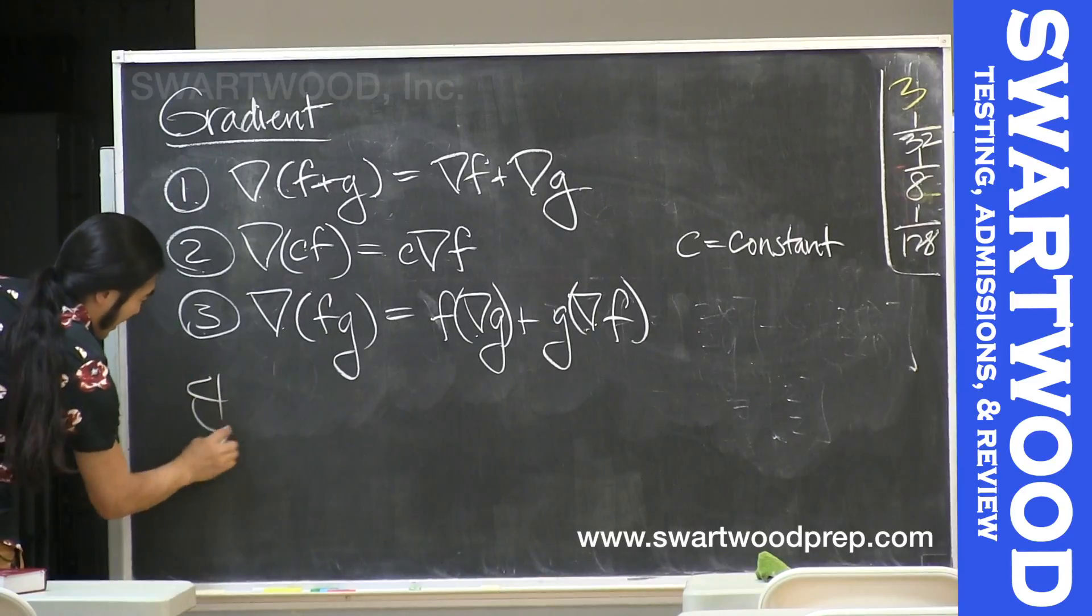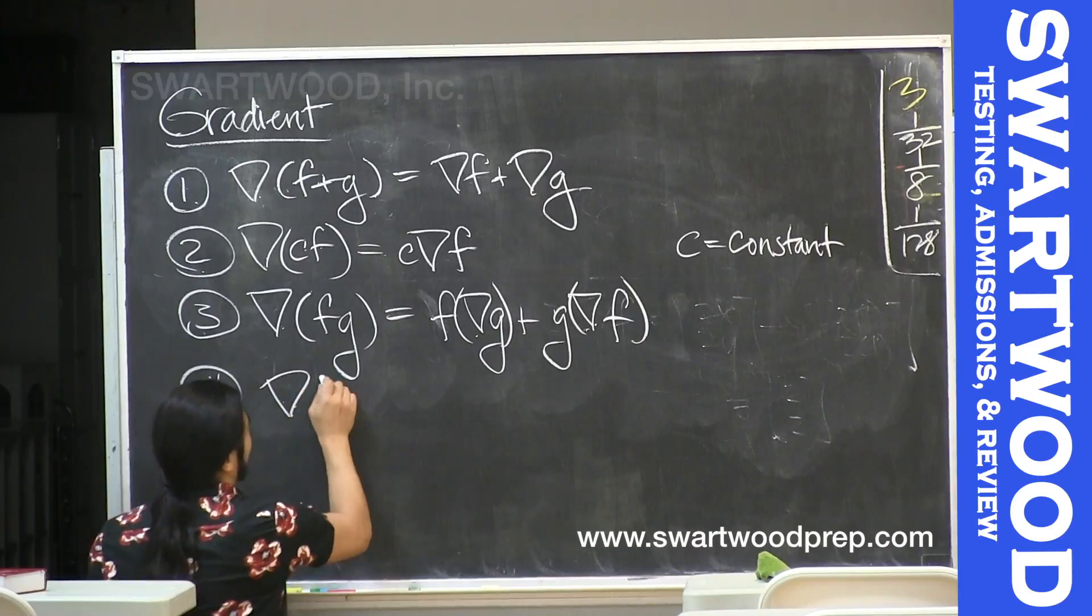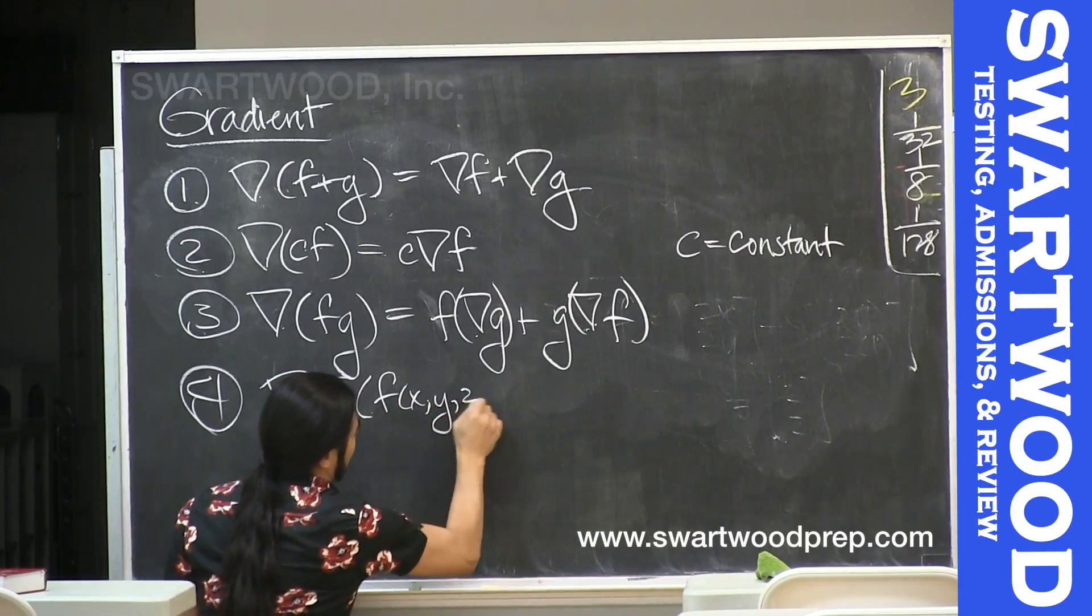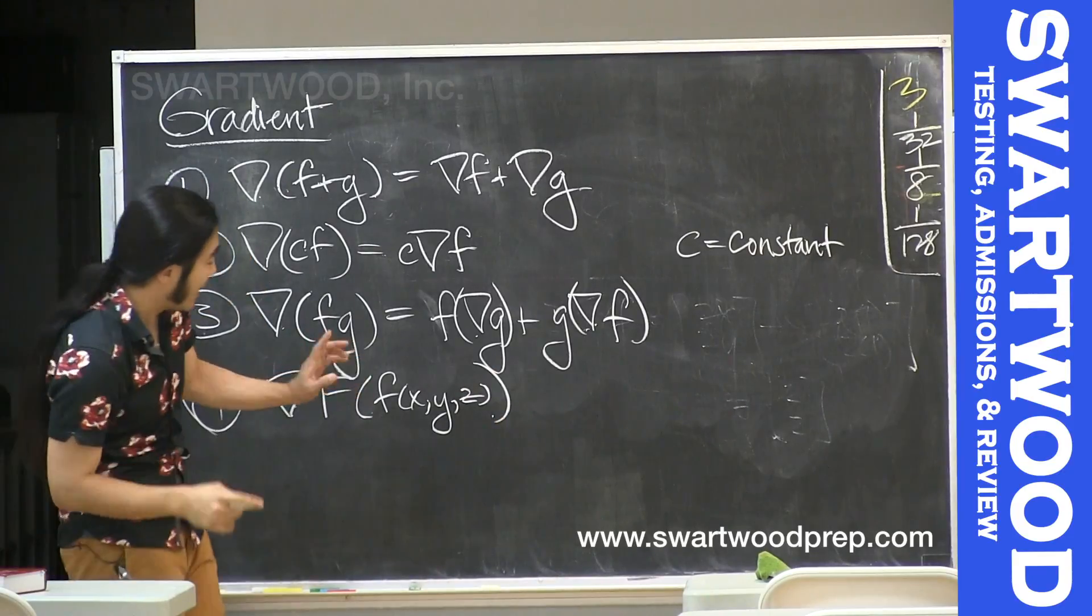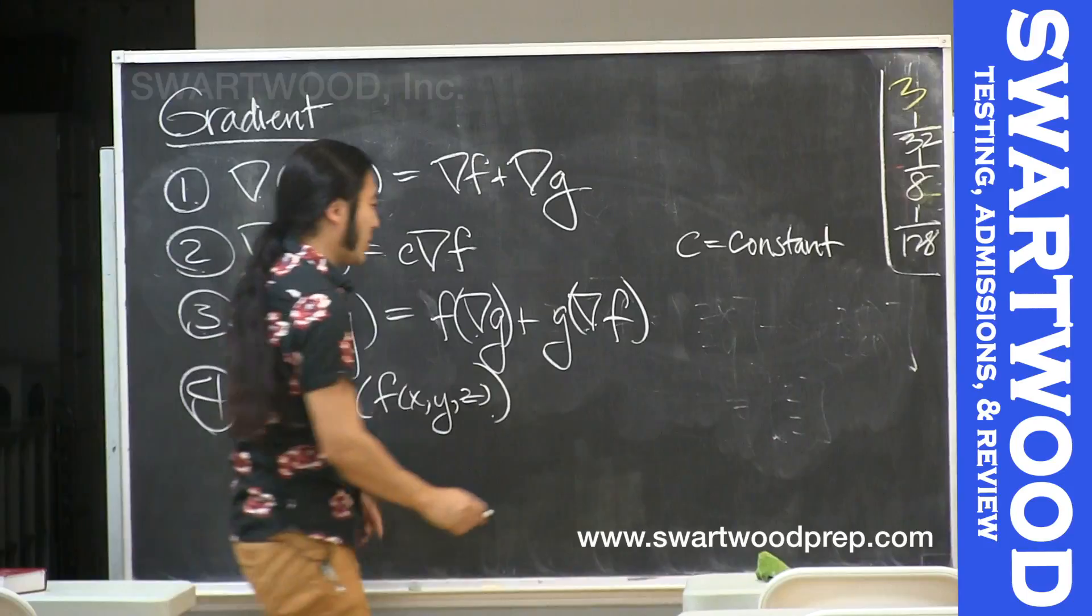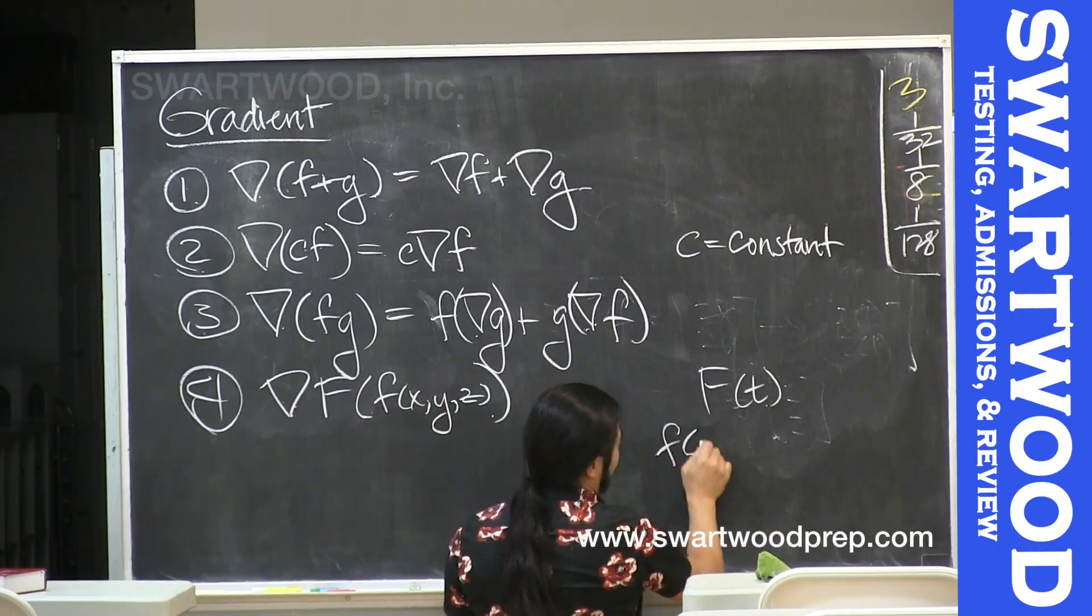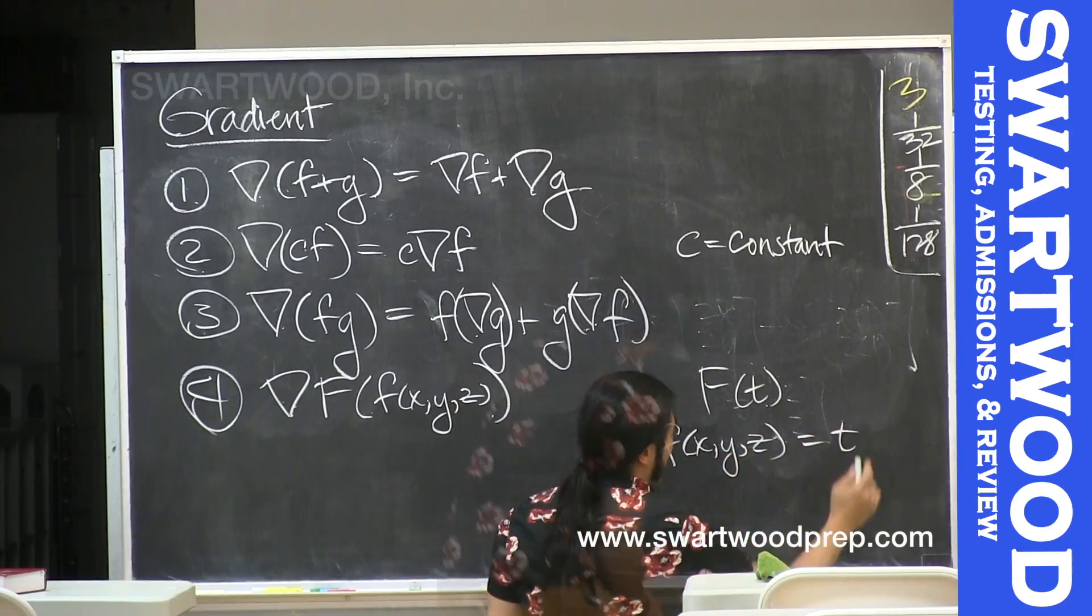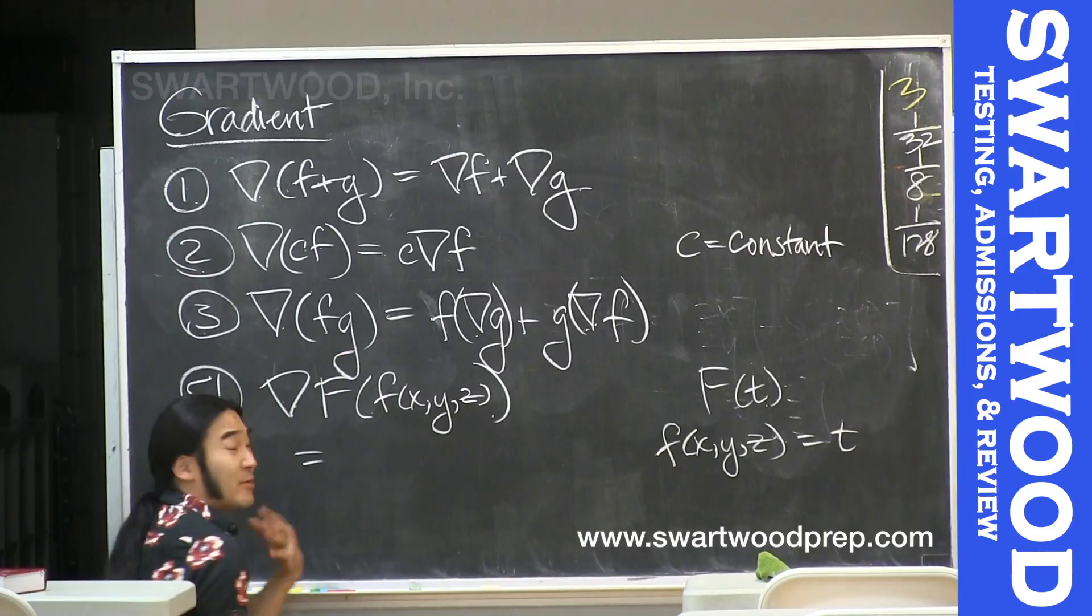And then number four. There's basically like a chain rule for your gradients. And that kind of works like this. Let's say we're taking the gradient of some function, big F, and we're plugging inside f(x,y,z). Where here you can think of big F as being a function of t, and you can think of little f as being a function of x, y, z, giving you some guy t.